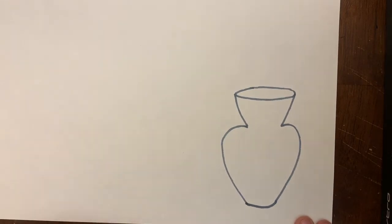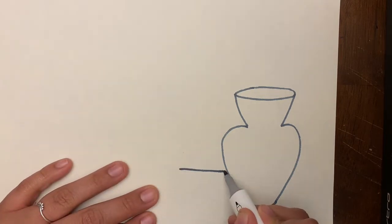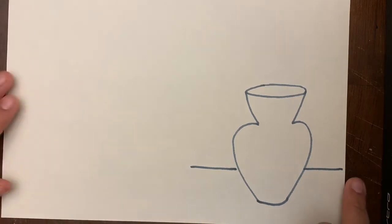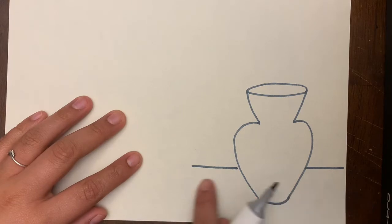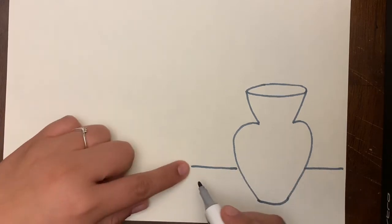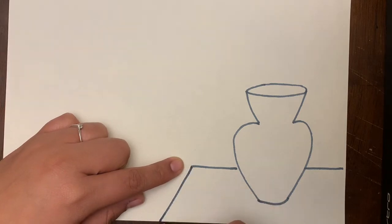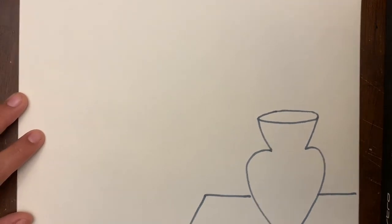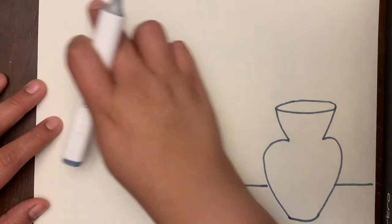Next I'm going to draw the table that our base will sit on. Start with a horizontal line going behind the base — not through it and not all the way across the paper. Then draw a diagonal line out — there's our angled line.